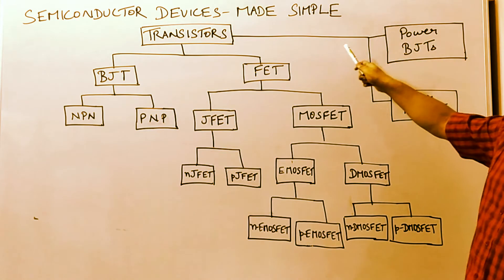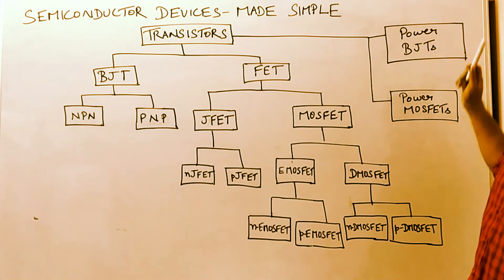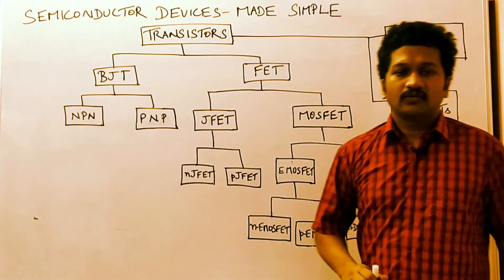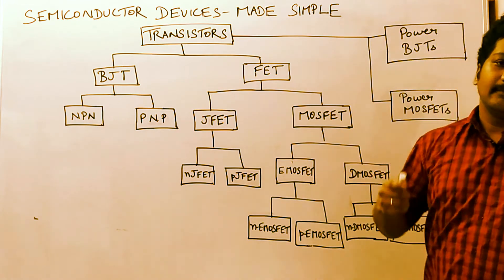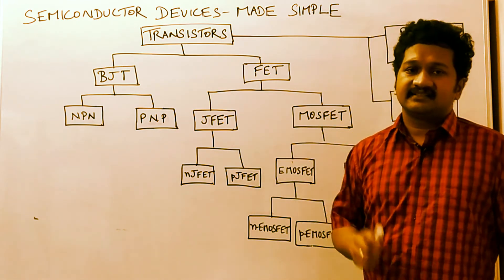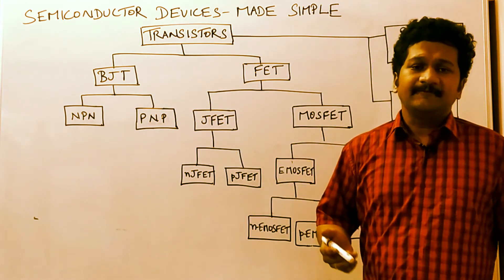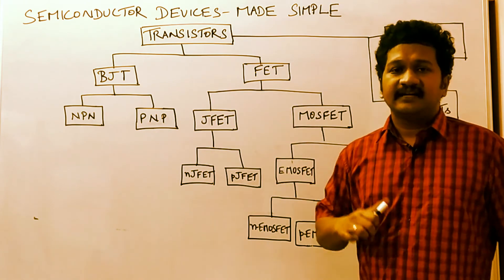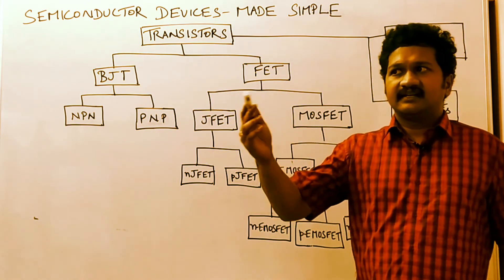Power transistors are divided into two types: power BJTs and power MOSFETs. Everything we will be able to see in detail in this lecture series. Previously, we discussed all the different types of diodes.